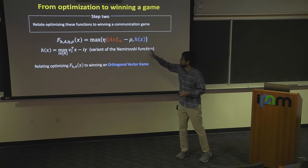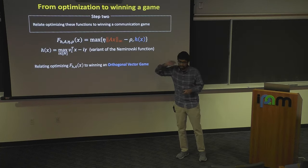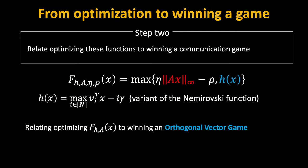We show that this is hard by showing a reduction to a communication game — the orthogonal vector game. This game has been a useful parameter for showing these lower bounds and has been used in some subsequent work as well.